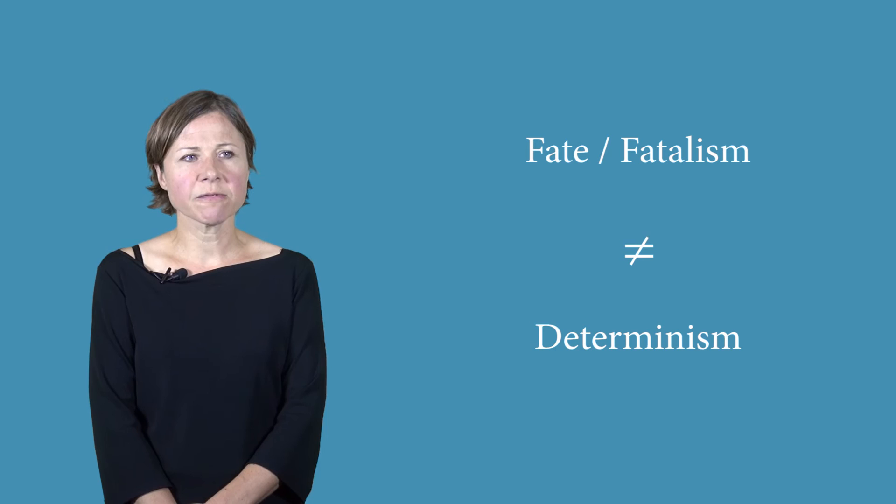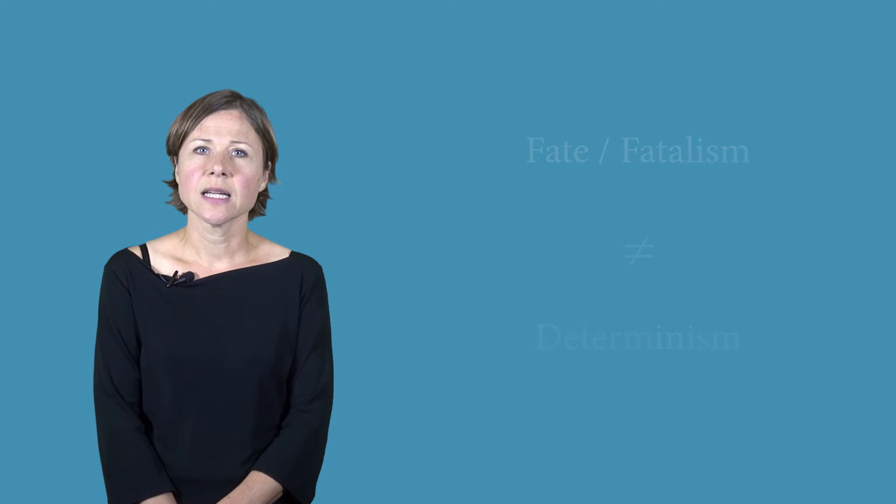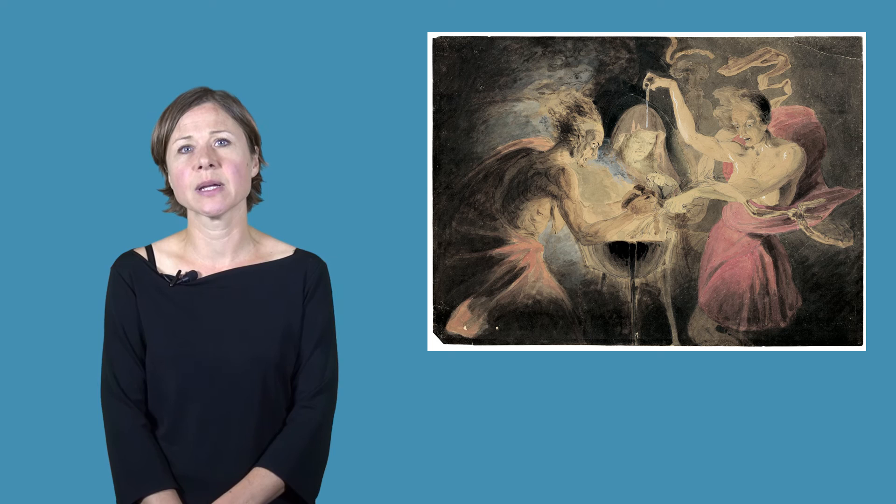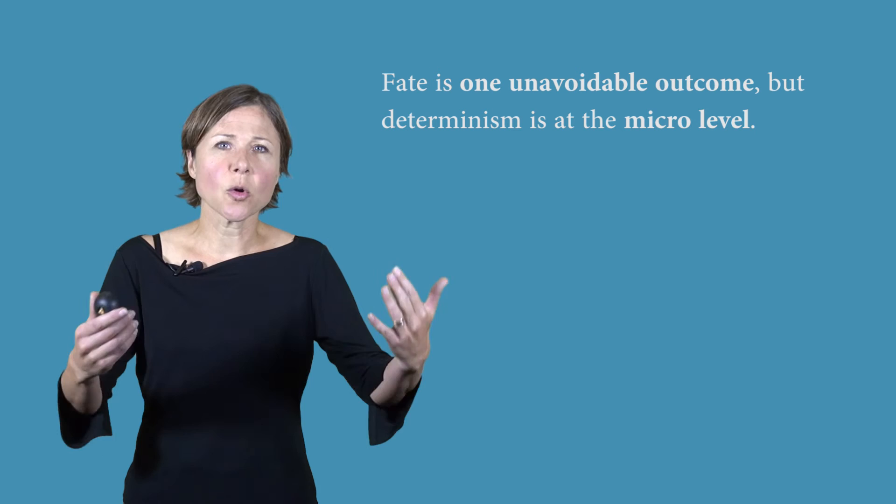First, when we think about fate, we think about one unavoidable outcome. So for example, in Macbeth, the witches say that Macbeth will be killed by someone not born of woman. So that's one big thing that's going to happen to Macbeth. But that's compatible with him being free in other ways, making his own decision in other ways, with him freely trying to avoid the fate. So the only bit that's fixed in this story is the fate. Whereas what determinism says is that every micro detail is fixed. Everything is fixed not at the level of description that we're generally interested in, which is the big things. Everything is fixed at the micro level, the tiniest thing, because all these things are part of a massive chain of cause and effect. Nothing escapes that chain.